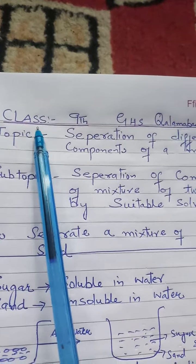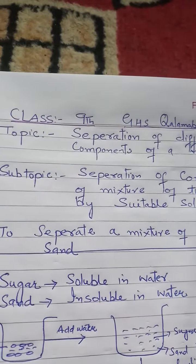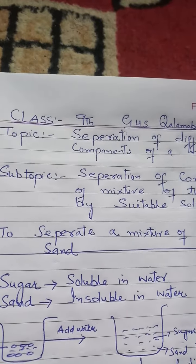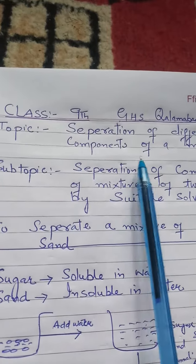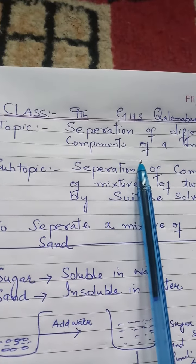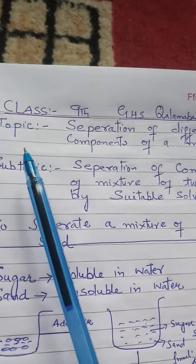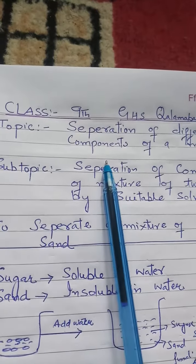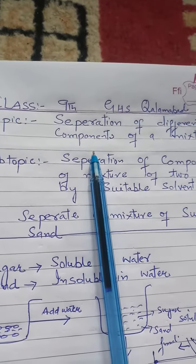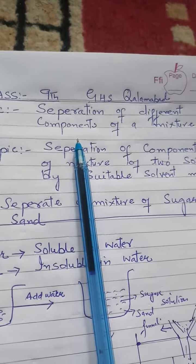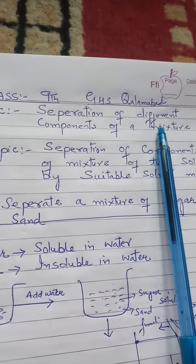Assalamu alaikum dear students of class 9, Girls High School Kalamabad. Last time we studied what is a mixture and what are the types of mixture. As we are aware, a mixture is of two types: homogeneous mixture and heterogeneous mixture. Today let us learn how we can separate the different components of a mixture.